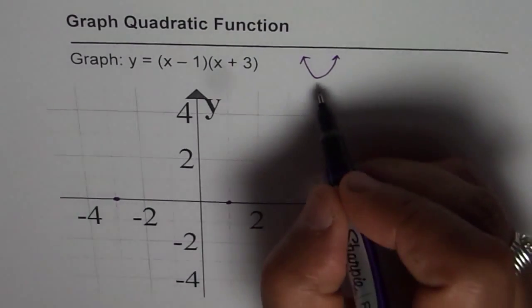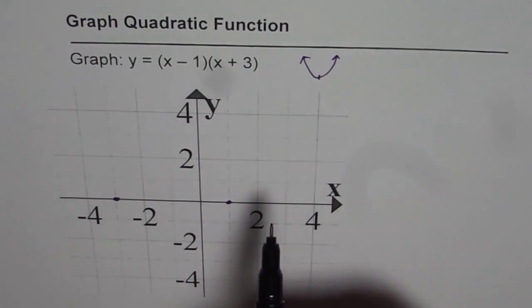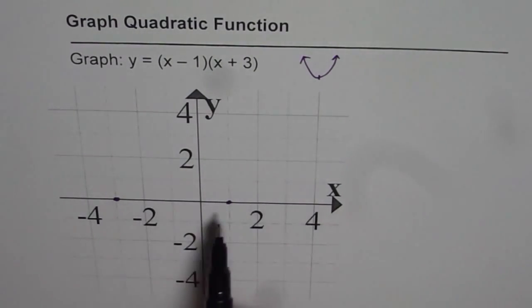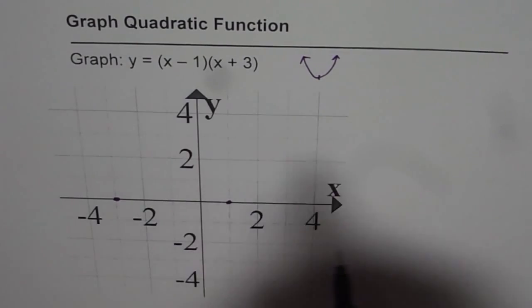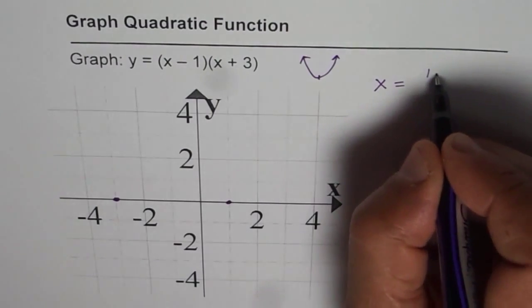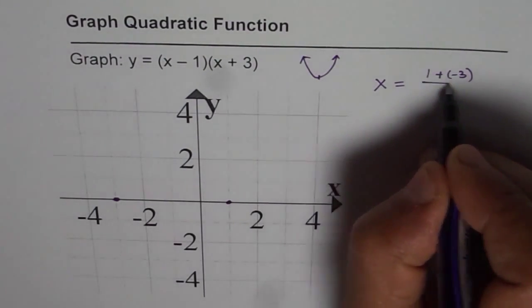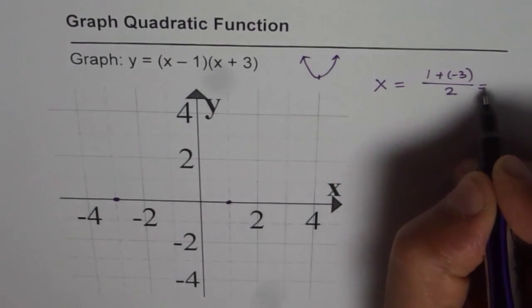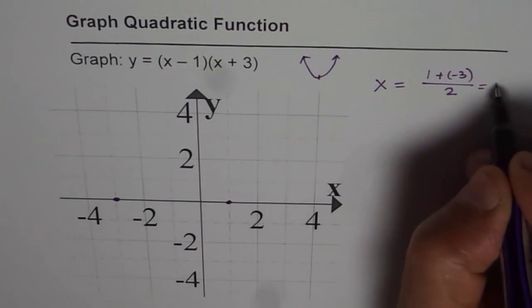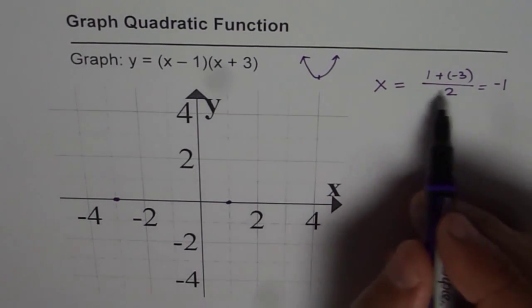Now, another important point is always the vertex. To find the vertex, we know it should be midway between these two. So midway is calculated by x equals 1 plus minus 3, divide by 2, right? That gives us minus 2 divided by 2 as minus 1. So the vertex lies at x equals minus 1.